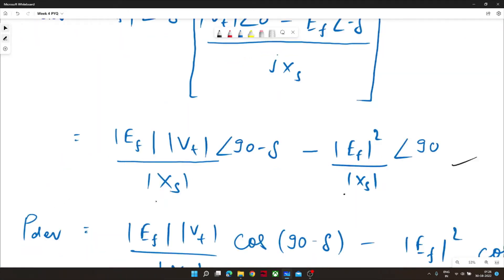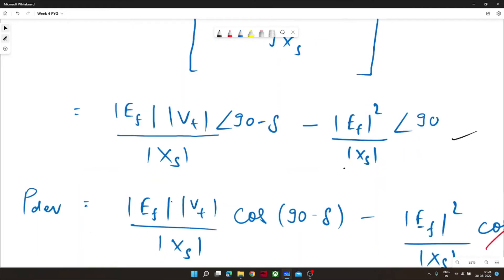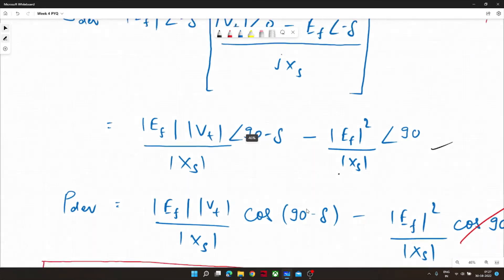After getting this equation we can easily calculate or we can easily break this equation into two components: one is cosine and one is sine. The component with sine will be the reactive power and the component associated with cosine would be real power.